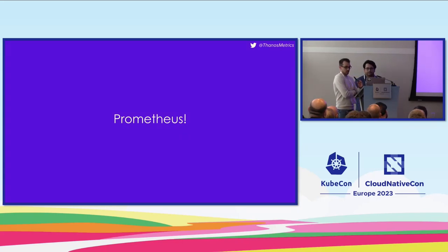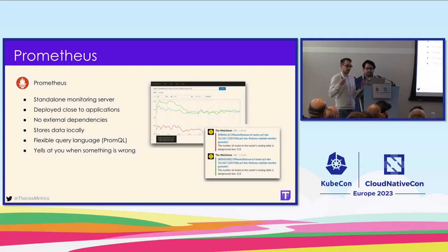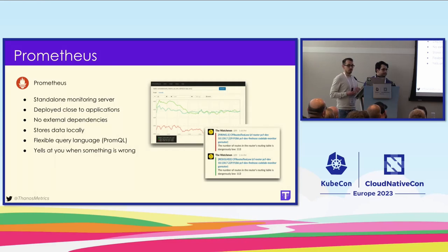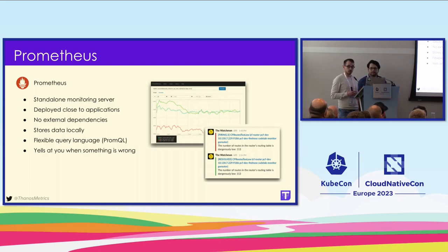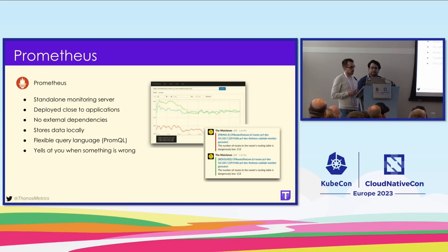It's kind of hard to talk about Thanos without mentioning Prometheus first. Prometheus — I expect most of you to have heard at least about it — is a standalone monitoring server or system that you drop in your environment, very close to your applications. It scrapes metrics from applications and then stores them locally. Prometheus doesn't have any external dependencies, which means you can't actually offload metrics data into an external database. As a result, it has to store those metrics on disk.